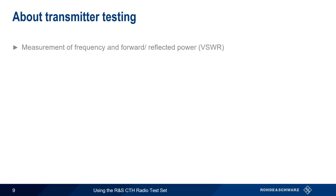Let's start with Transmitter Test. Transmitter tests consist of measurements of frequency, as well as both forward and reflected or reverse power. The CTH can also calculate and display voltage standing wave ratio, or VSWR, from the measured values of forward and reflected power.